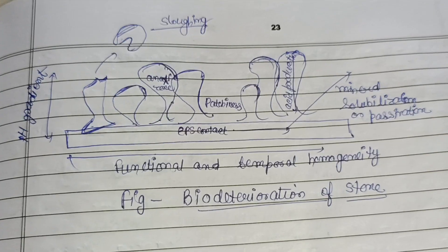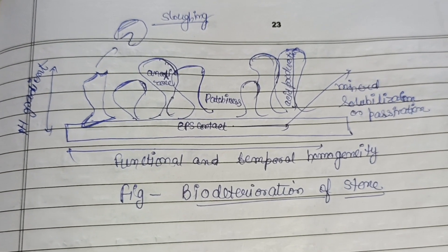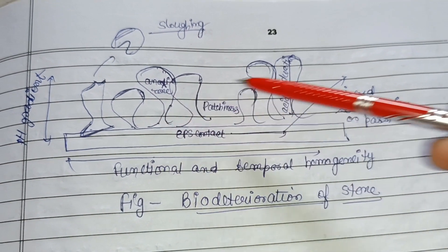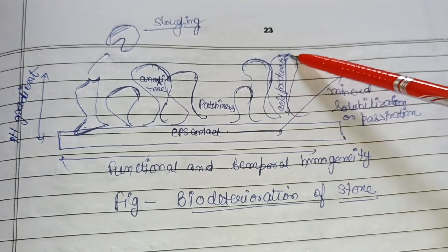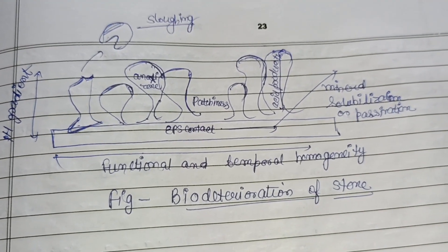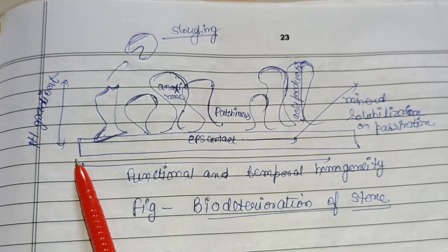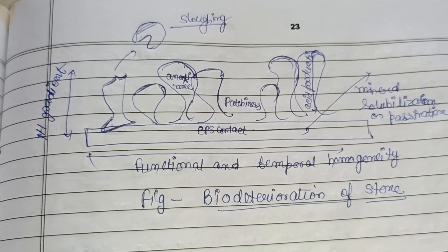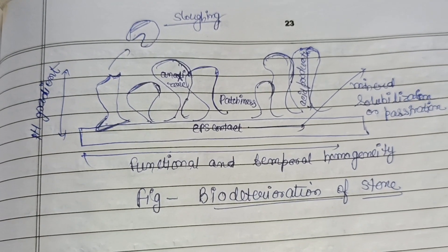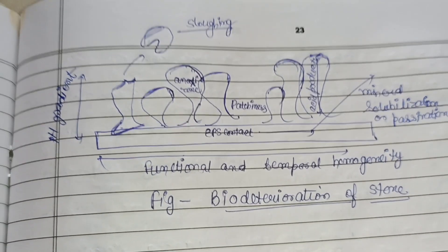This diagram represents the biodegradation of stone. Patchiness develops as the stone shape degrades, acid production occurs, mineral solubilization or passivation takes place, and the shape changes according to the pH gradient. That covers the control of biodegradation and its methods. If you like the video, please like, share, and subscribe to the channel.